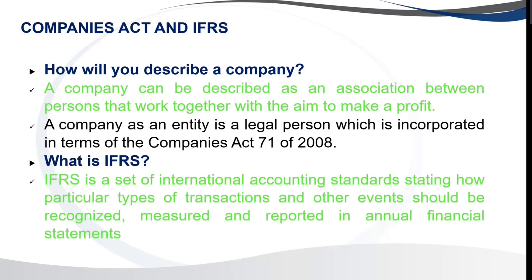So how would you describe a company? A company can be described as an association between persons that work together with the aim of making a profit. The company is the entity - the legal person which is incorporated under the Companies Act. So instead of being registered as a person at home affairs, here we are incorporated under the Companies Act. The majority of companies registered with CIPC have got a name, and that is administered under the Companies Act.